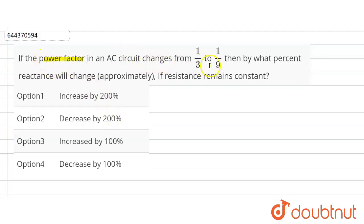Hello friends, question is given here: If the power factor of an AC circuit changes from 1/3 to 1/9, then by what percent will reactance change if the resistance remains constant? Let's assume here this is impedance Z connected with a voltage source.